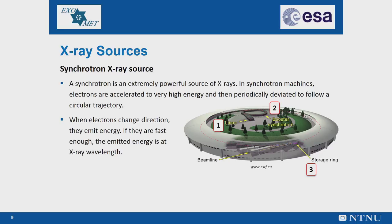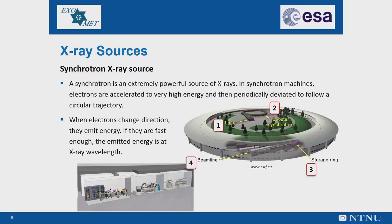A beamline generally consists of three sections. In the optics cabin, specialized mirrors and crystal optics are used to modify the raw X-ray beam provided by the accelerator. In the experimental cabin, the beamline provides a way to put the sample of the material in the X-ray beam; depending on the experiment, the sample might be in open air, cooled by a jet of liquid nitrogen or helium, or contained within a custom-designed chamber that controls the experimental conditions. Various detectors that capture and record the X-rays are also placed in this room. In the control cabin, experimenters control the position of the sample, adjust the beam, and record data.